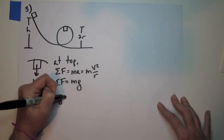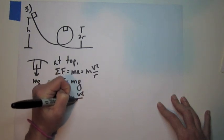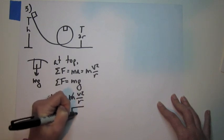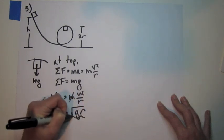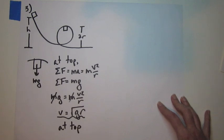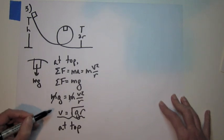So we can set these equal. And we see that the minimum speed to successfully navigate the top of the circle is square root of gr at the top.